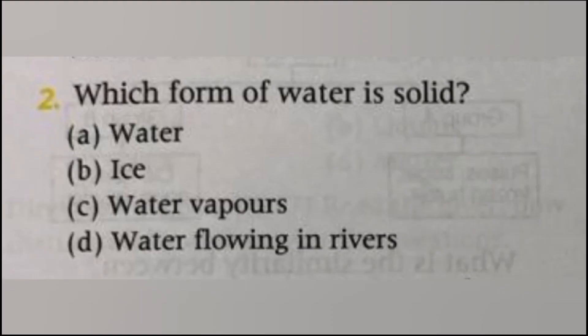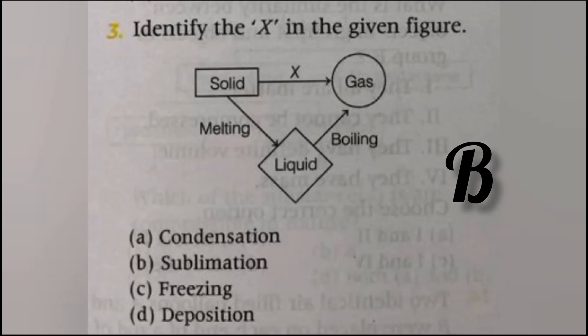Which form of water is solid? Water, ice, water vapor, or water flowing in river? The answer is B, ice. Water when frozen converts into ice, which is the solid form of water.